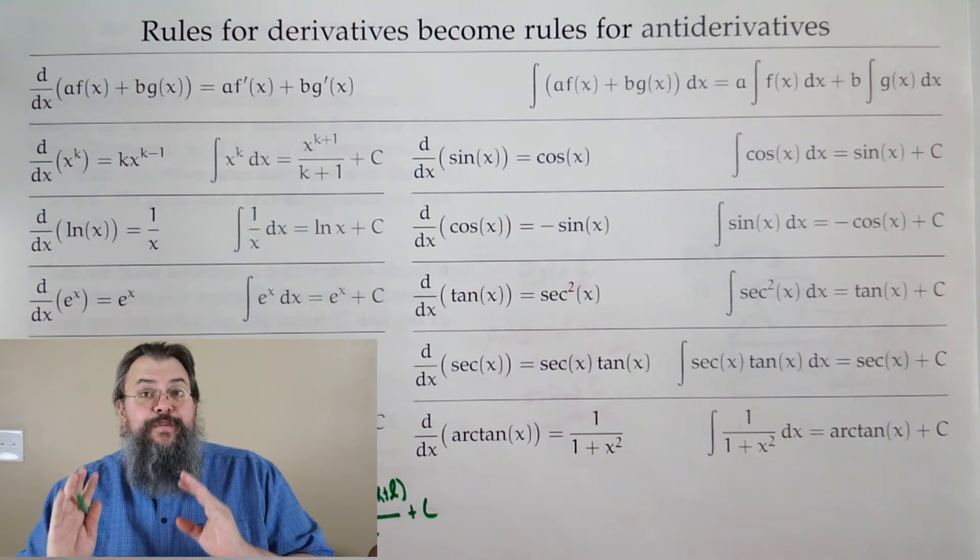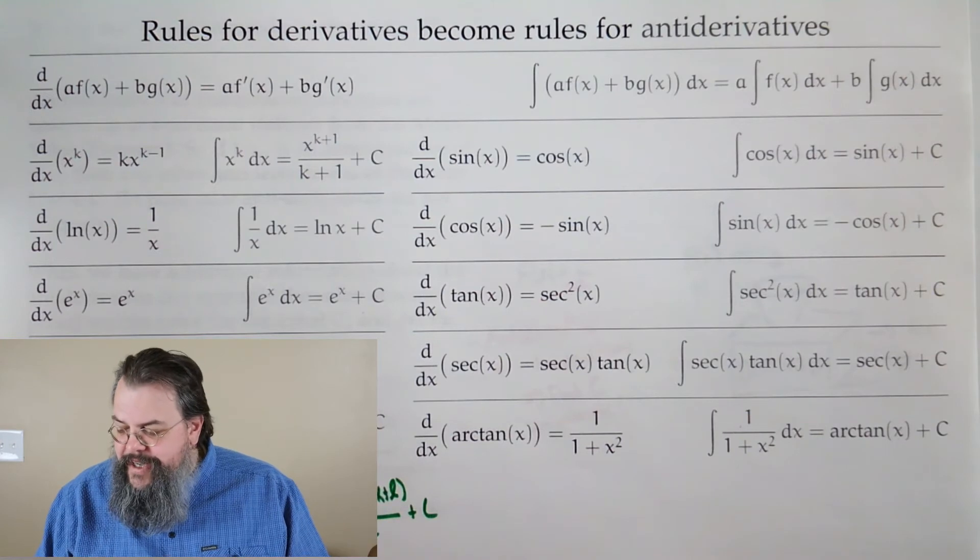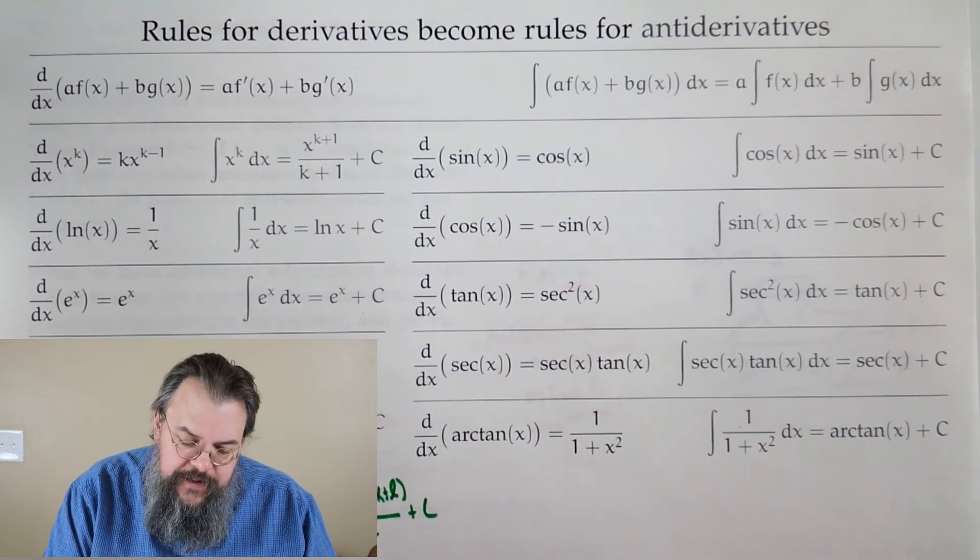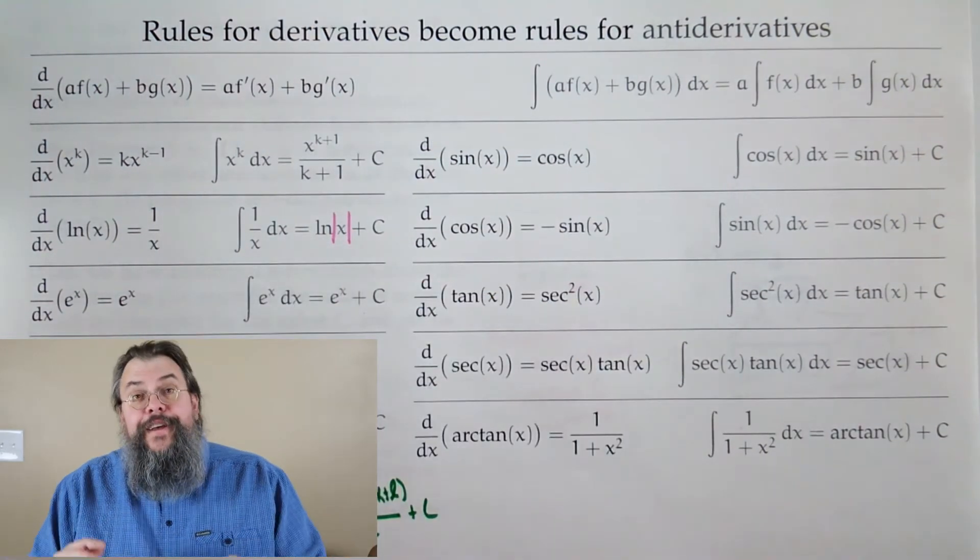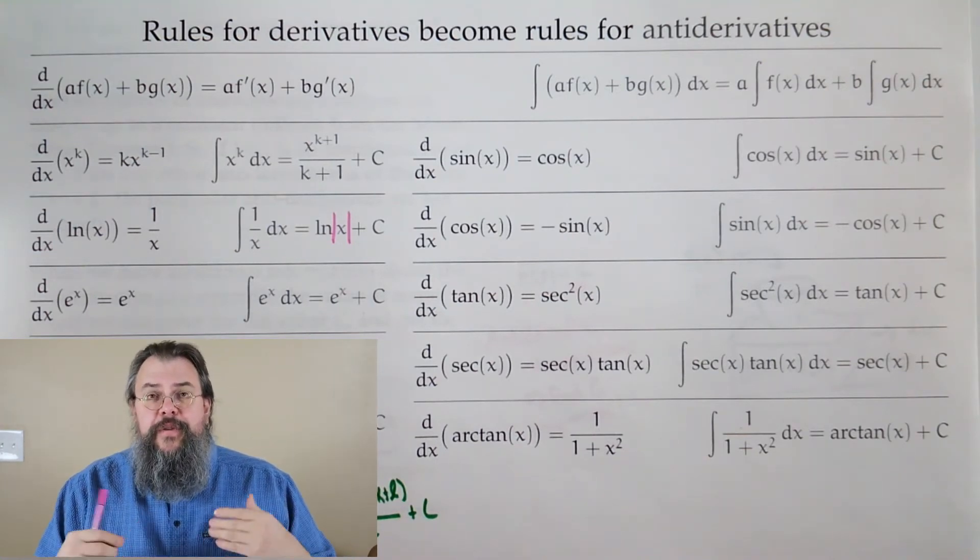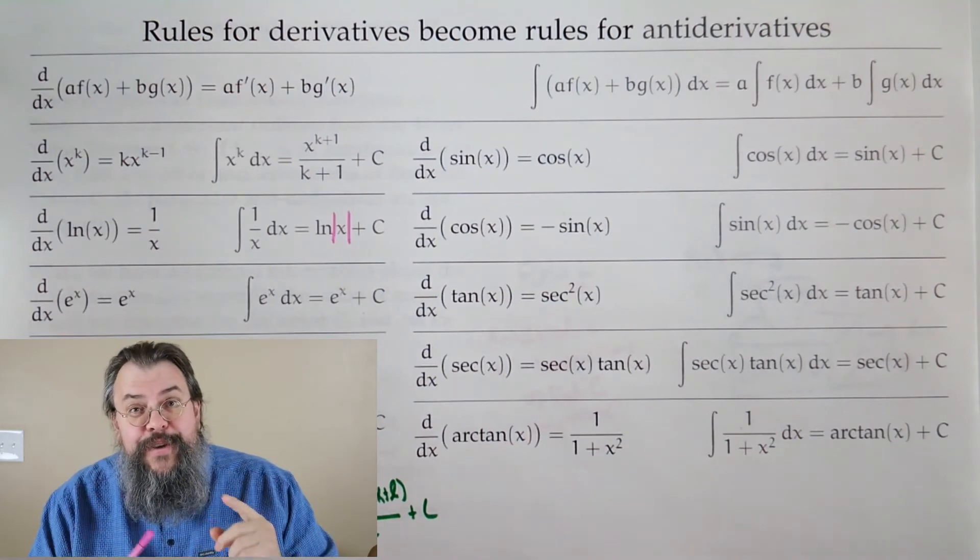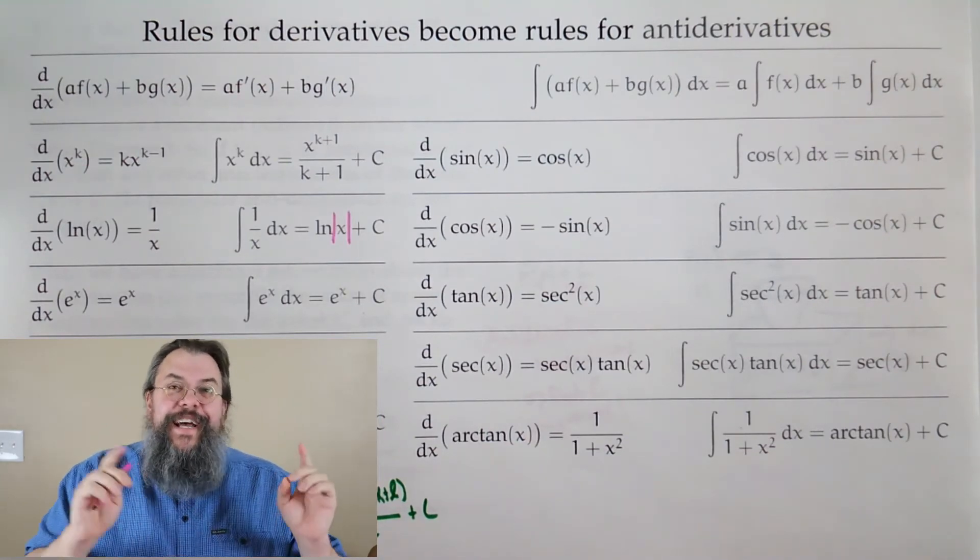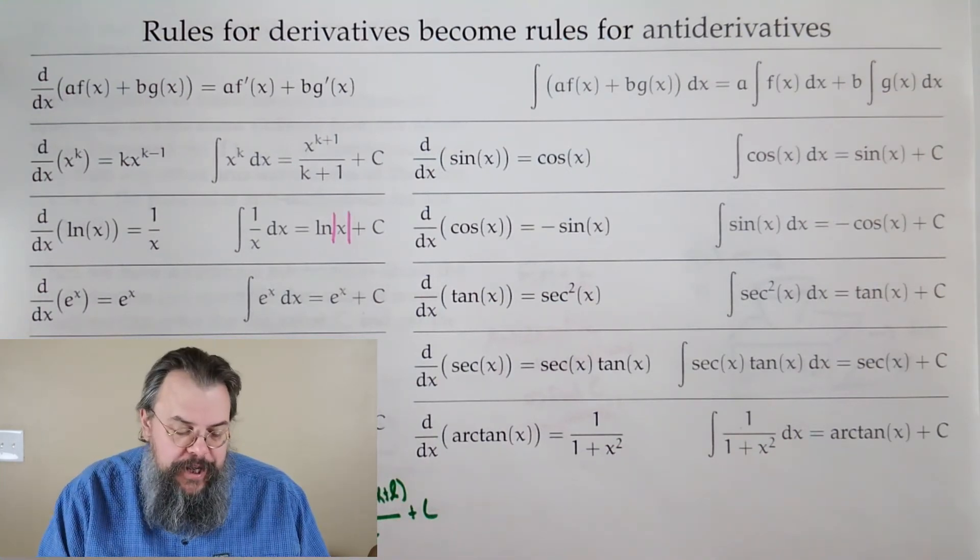Now, this wouldn't work if you had k equals minus one, but that's all right. We know the derivative of natural log is one over x. So the integral of one over x is natural log. Now, there are some purists out there who will say that's not quite right. It should be natural log of absolute value of x. If you're a purist, I'll put that in there. For most purposes, there's sort of an implied take the absolute value.